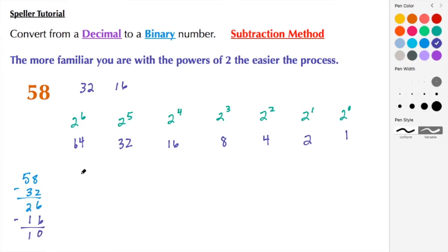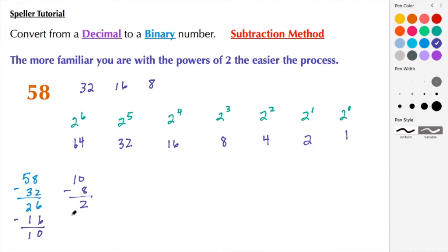Now we're using 10 for our comparison. 64, 32, and 16 are all too much. 8 is the next number we can use because it's less than or equal to 10, so we place 8 here. 10 minus 8 gives us 2. We look for the next power less than or equal to 2 — and 2 is less than or equal to 2, so we do 2 minus 2, which gives us 0. That lets us know we can stop.